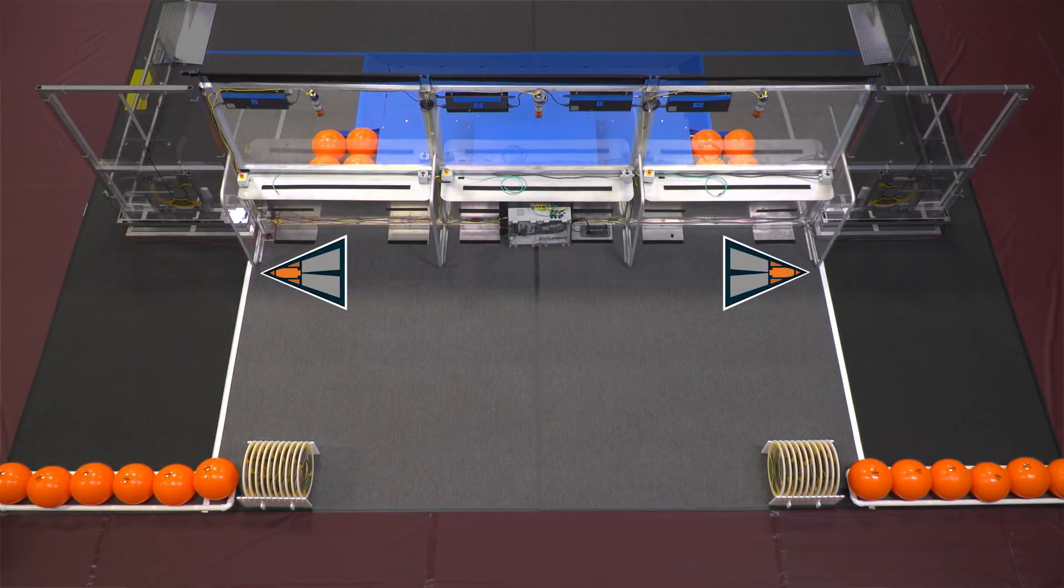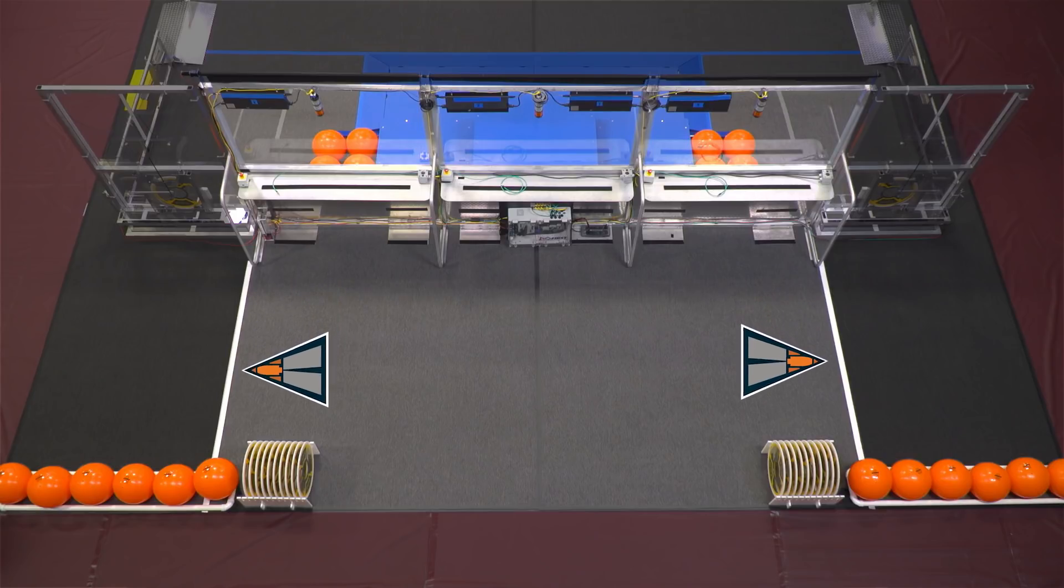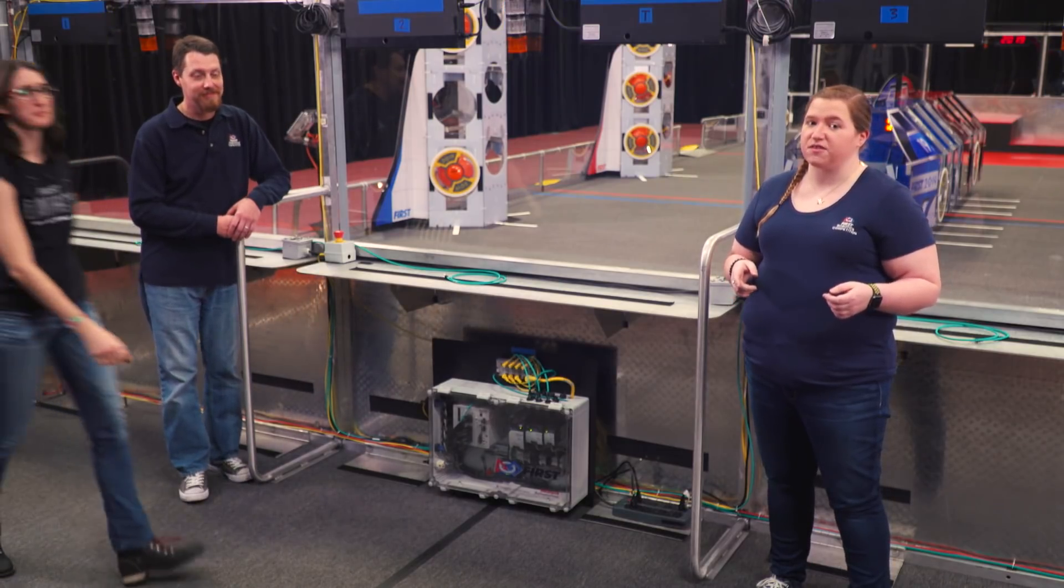Also take special notice that the lines on the floor of the alliance station are different this year. Starting lines run perpendicular to the alliance wall. They separate the driver stations from the loading stations. Drive teams must stay between these lines during sandstorms. No leaning or peeking over them.